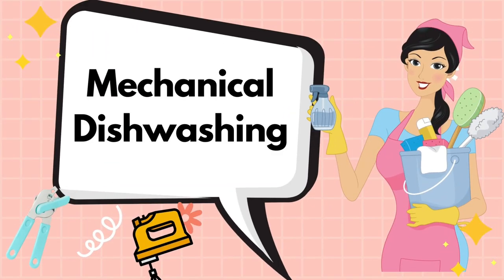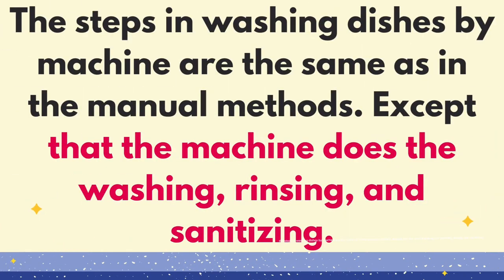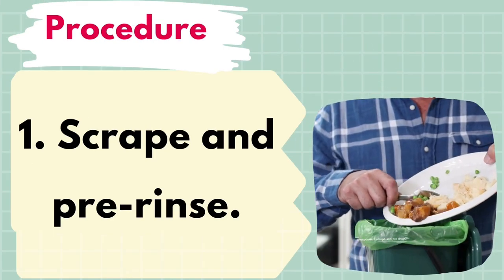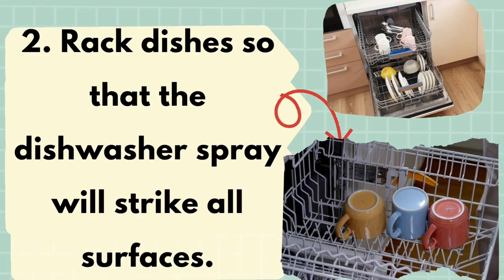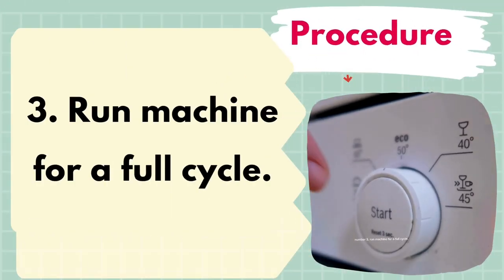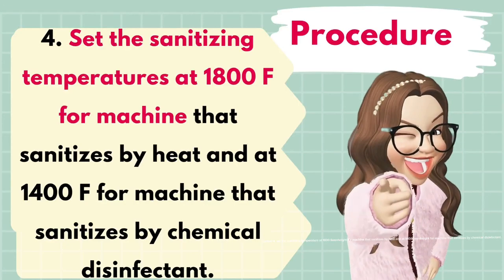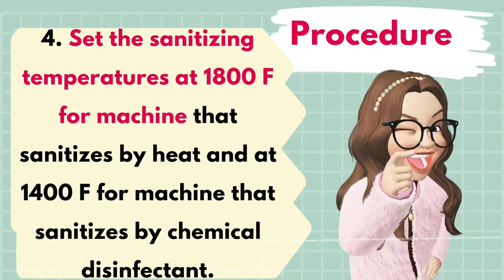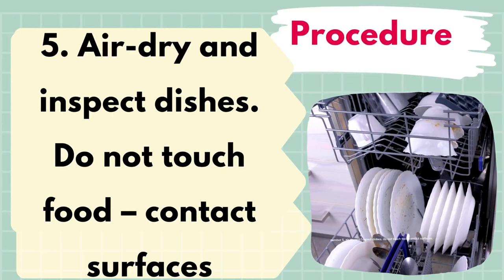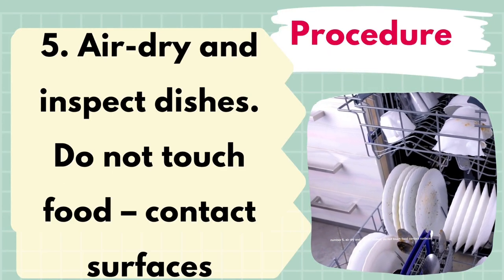Mechanical Dishwashing. The steps in washing dishes by machine are the same as in the manual method, except that the machine does the washing, rinsing, and sanitizing. Procedure: Number 1: scrape and pre-rinse. Number 2: rack dishes so that the dishwasher spray will strike all surfaces. Number 3: run the machine for a full cycle. Number 4: set the sanitizing temperature at 180°F for machines that sanitize by heat, and at 140°F for machines that sanitize by chemical disinfectant. Number 5: air dry and inspect dishes — do not touch food contact surfaces.